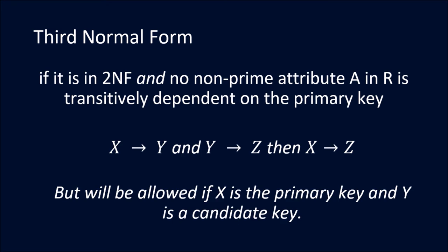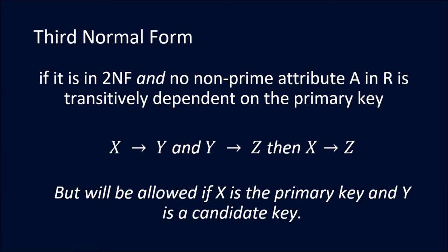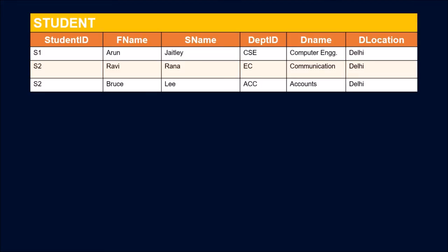Third Normal Form requires that the relation is first in 2NF, and no non-prime attribute in R is transitively dependent on the primary key. A transitive dependency occurs when X → Y and Y → Z, so X → Z. This is a transitive functional dependency, but it is only a problem for 3NF if Y is not a candidate key of the relation.